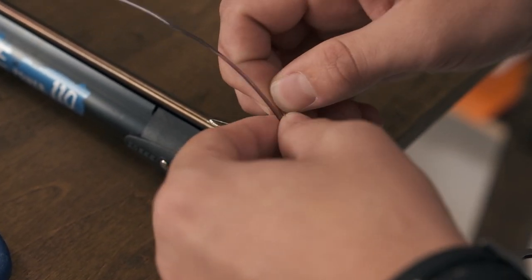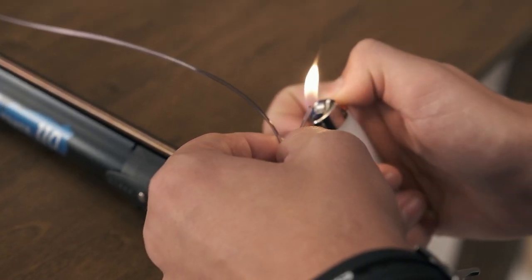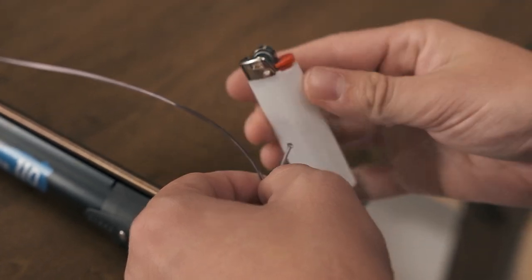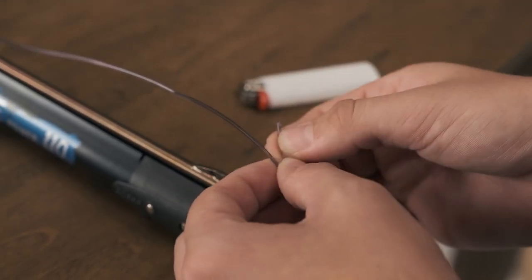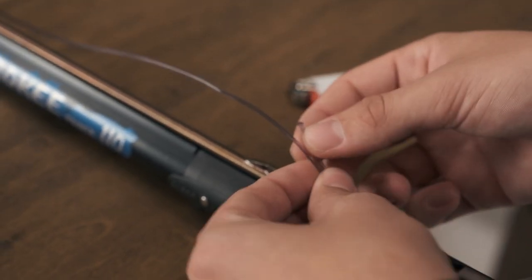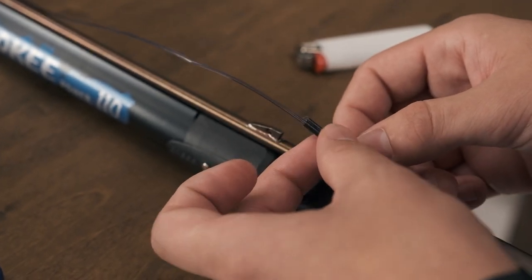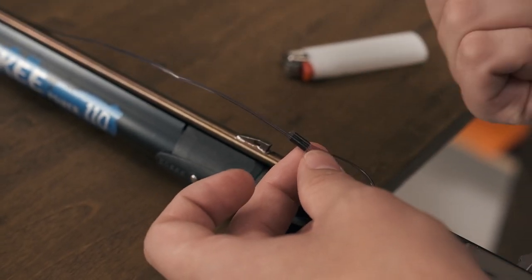At this point, you want to take your lighter and we're going to lightly burn the end of the mono and then cap it. What that is going to do is create a mushroom effect on the top. And once this cools down, we will slide it down to the top of the crimp. And that helps hold the crimp into place.